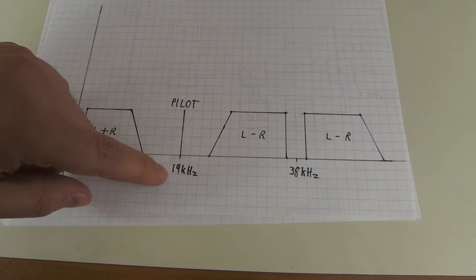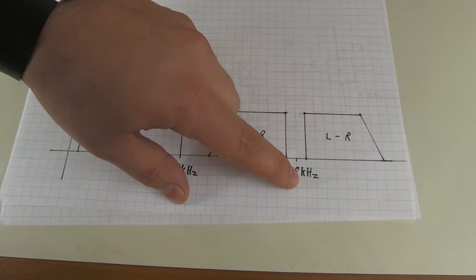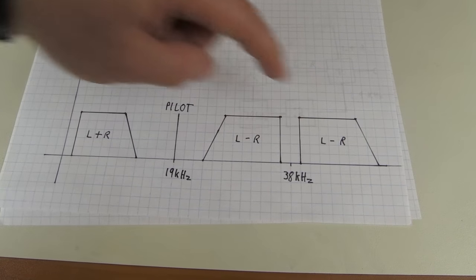And if you double this 19 kilohertz pilot tone, you get the 38 kilohertz carrier that was used to create this double sideband signal.